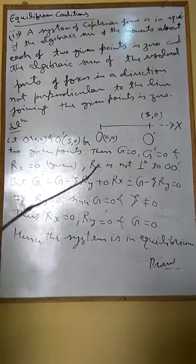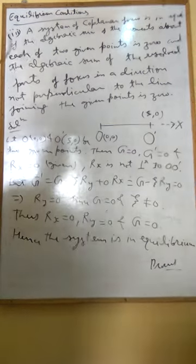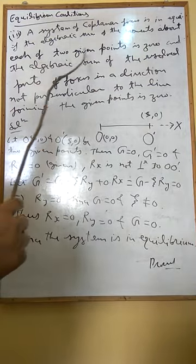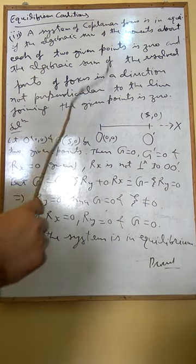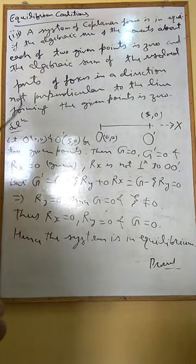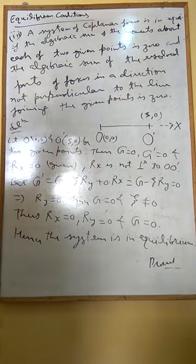The third condition is: a system of coplanar forces is in equilibrium if the algebraic sum of the moments about each of two given points is zero, and the algebraic sum of the resolved parts of forces in a direction not perpendicular to the line joining the given points is zero.